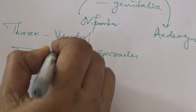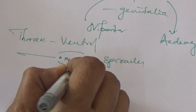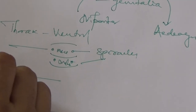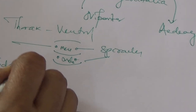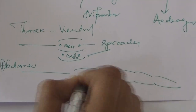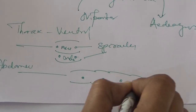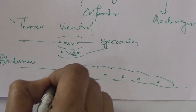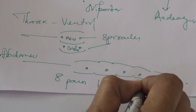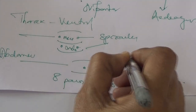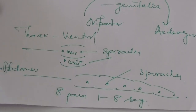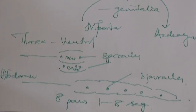On the meso and metathoracic segments, you find a pair of spiracles each — that is totally two pairs of spiracles on the thoracic region. On the abdomen, spiracles are not on the ventral side but on the lateral side. You can see eight pairs, from the first abdominal segment to the eighth abdominal segment on the lateral side, which are again spiracles or respiratory openings.